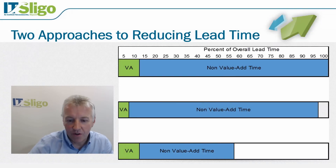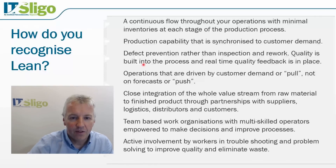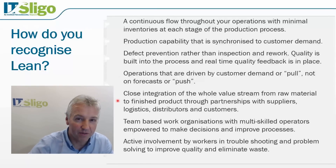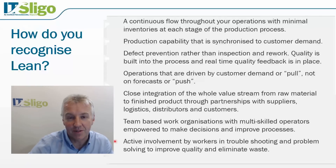How do you recognize a lean company? Characteristics of lean include: continuous flow throughout operations, minimal inventories at each stage of production, production capability synchronized to customer demand, quality built into the process, real-time quality feedback, pull systems in place, the whole value stream — from raw material to finished product to the customer, including distributors, suppliers, and logistics — tightly integrated, multi-skilled operators, team-based work, and active involvement by workers in troubleshooting and problem solving, including doing minor maintenance themselves, which is the concept of TPM (Total Productive Maintenance).